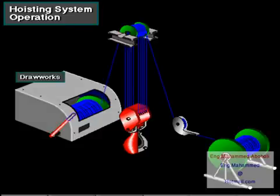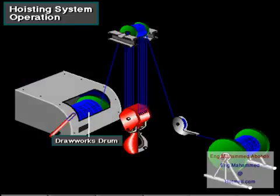Once they've strung the right number of lines, they run the line to the drawworks and firmly clamp the line to the drum. The driller then takes in the drilling line, which wraps around the drum. The driller usually takes in enough line so that the line makes at least six wraps around the drum.